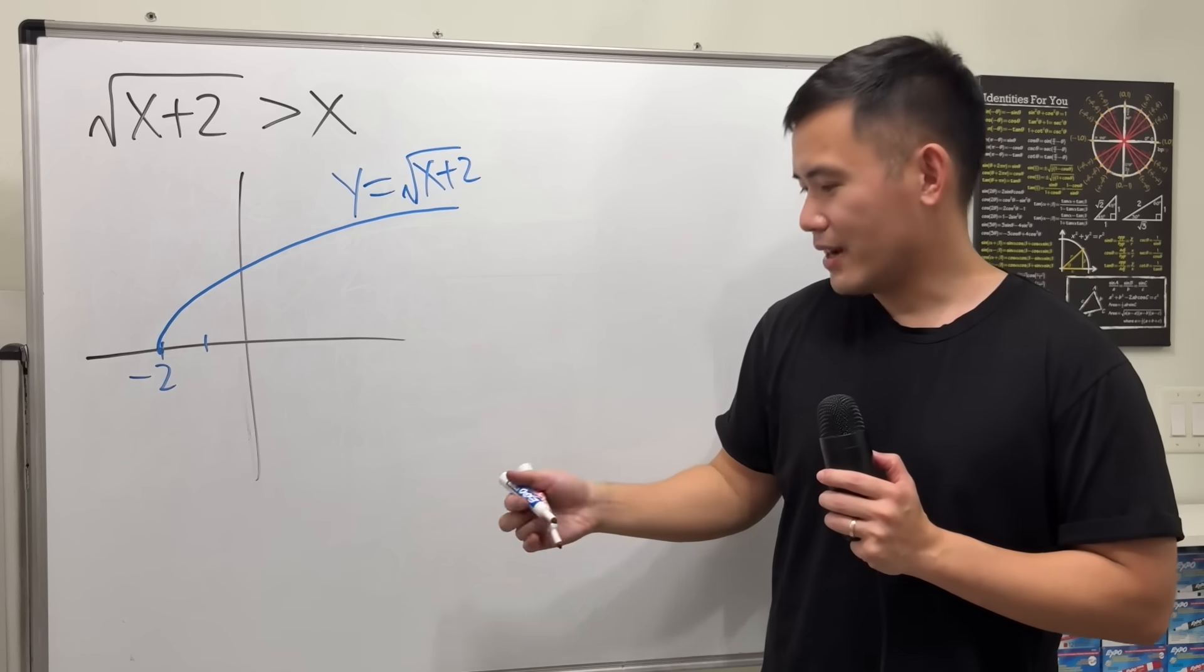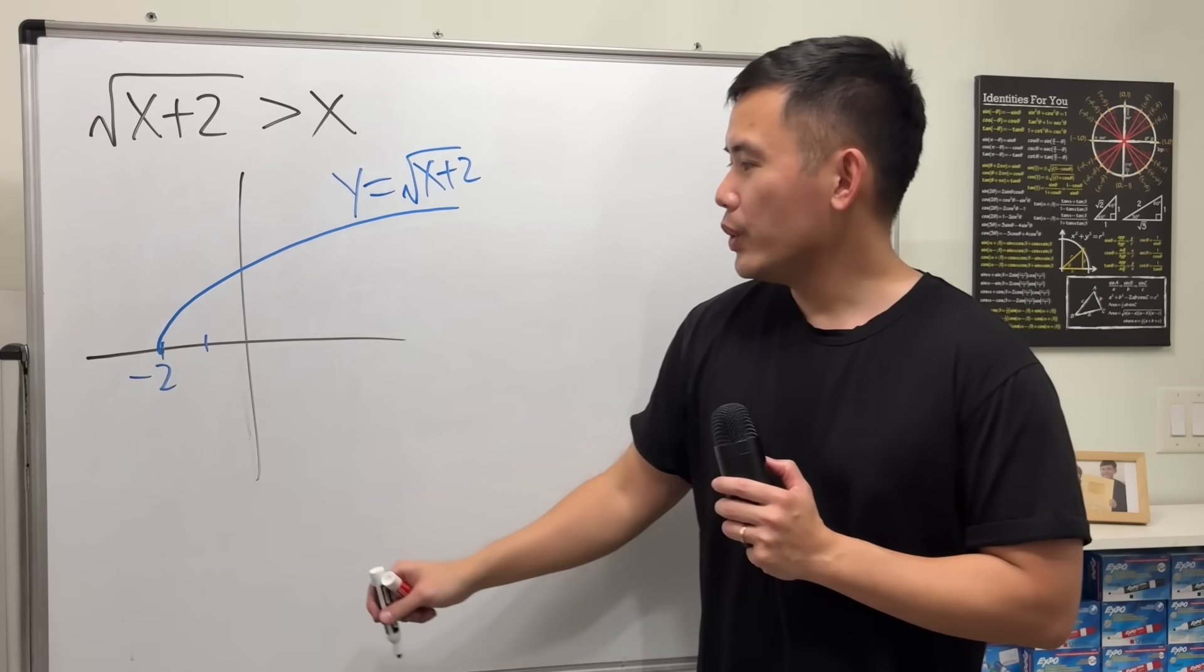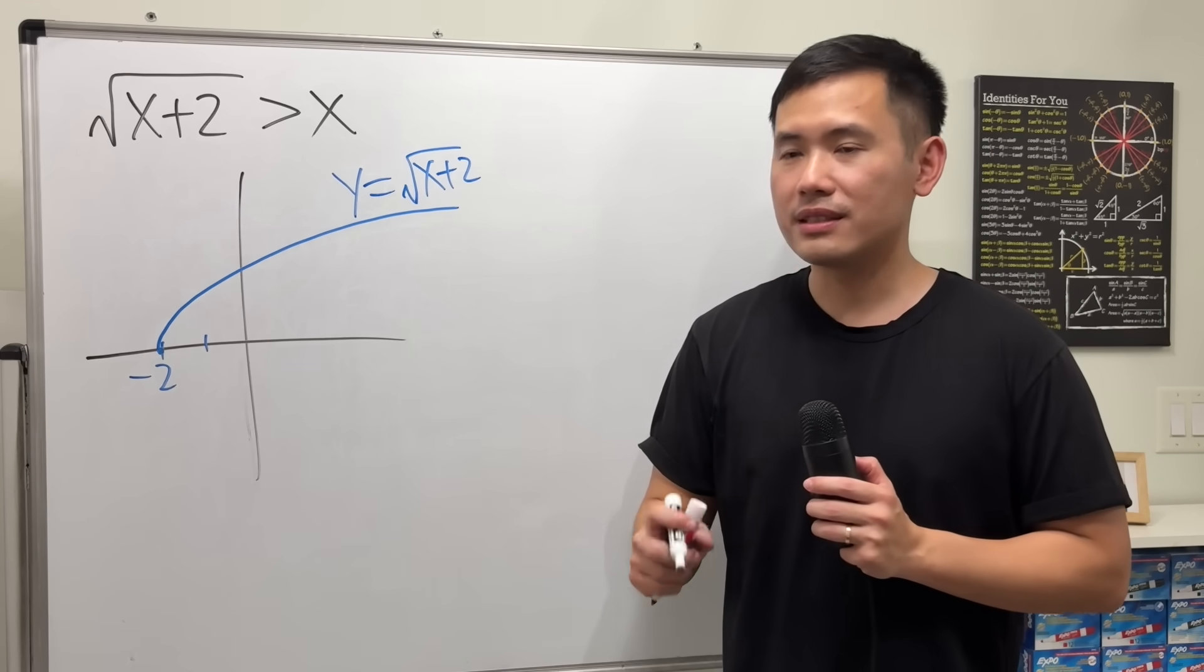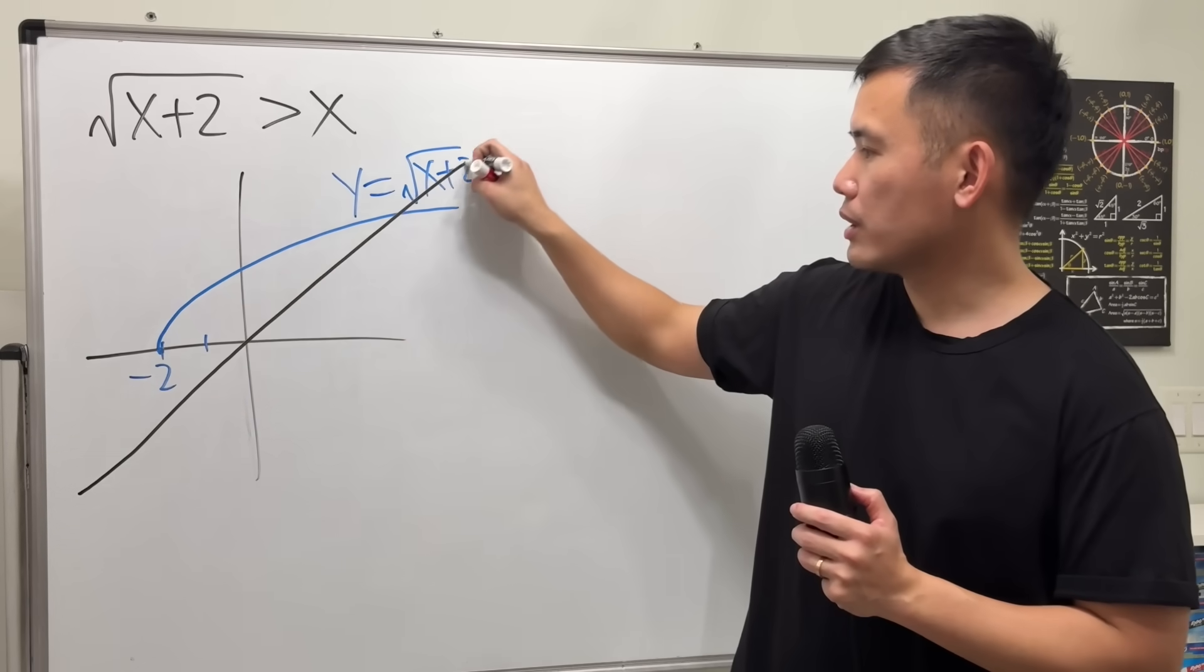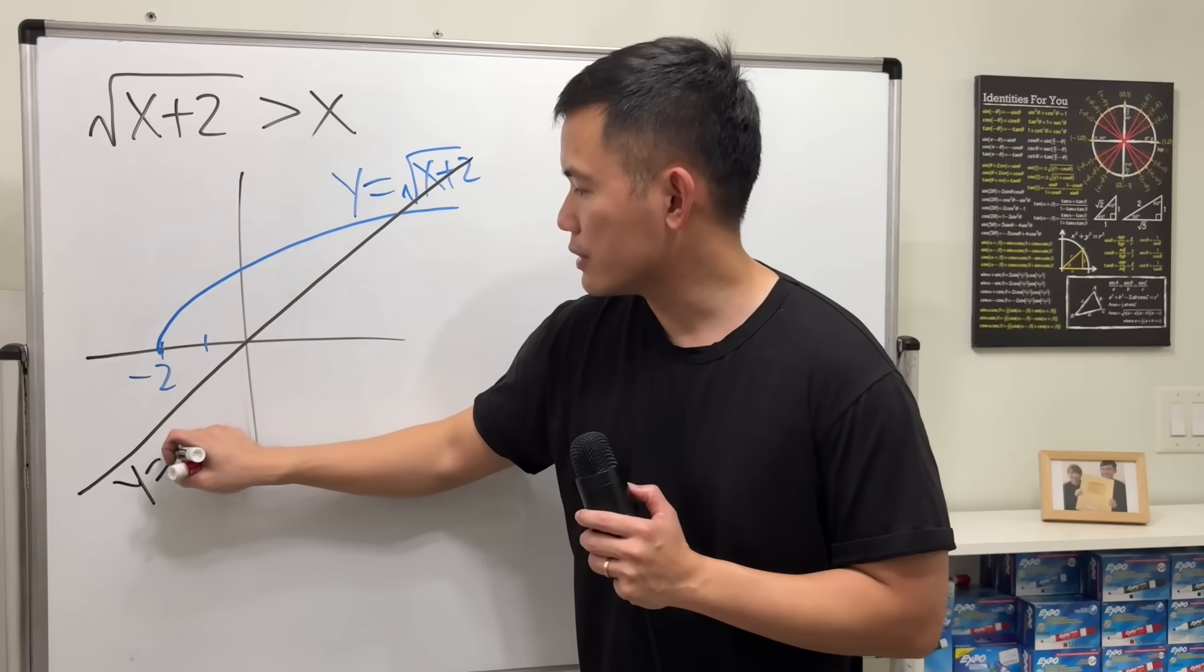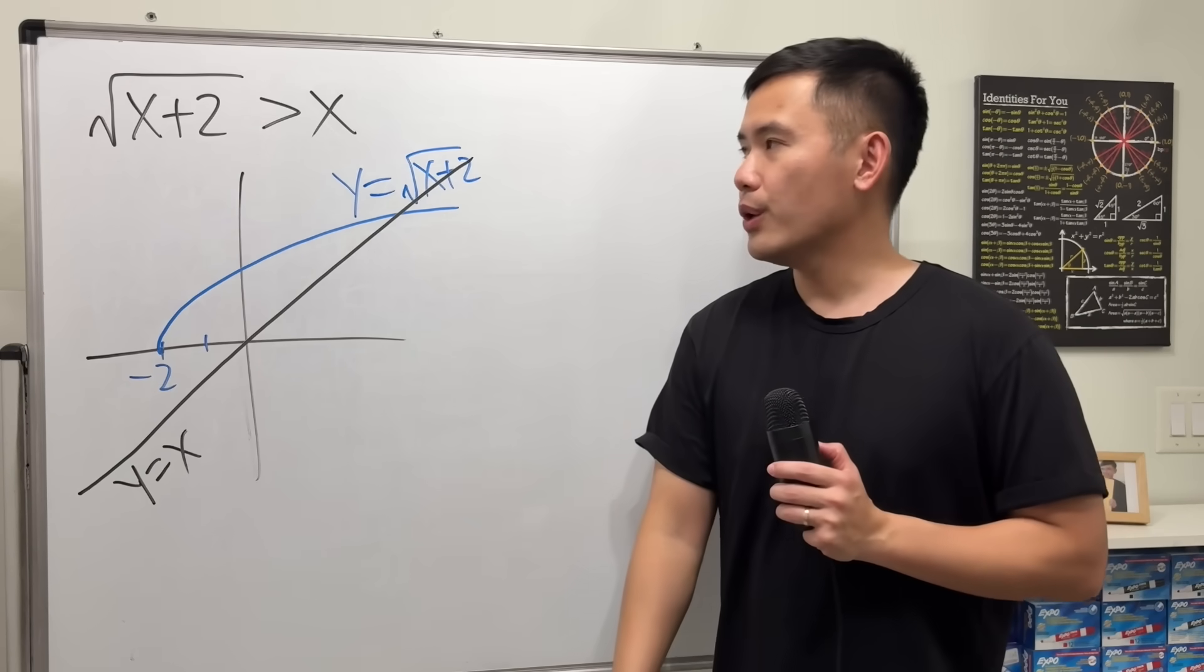Now for the other equation, we will have to graph y is equal to x. That's just going to be this line right here. y equals x. So far, so good.